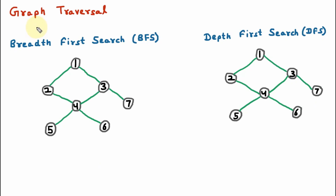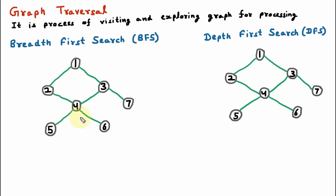Hello everyone, my name is Ankit Verma and today we are learning graph traversal. Graph traversal is the process of visiting and exploring the graph for processing. Here a graph is given in which we have black color nodes containing numbers 1, 2, 3, 4, 5, 6 and 7. These are the vertices, connected with green color lines, and these are the edges.